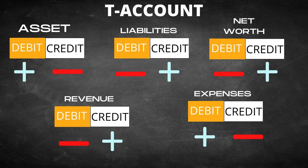Since liabilities have a normal balance of credit, if you put an amount on the debit side of liabilities, it will decrease the total liabilities. If you put the amount on the credit side of liabilities, it will increase the liability — and so on with the other accounts in the ledger.